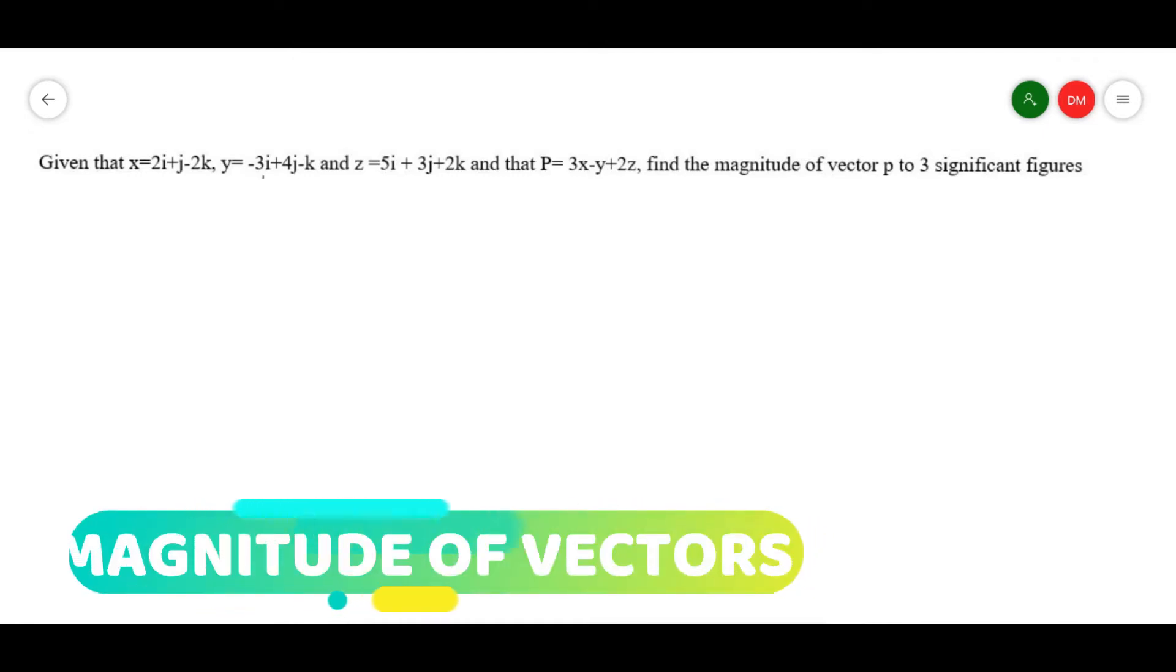So these are vectors expressed in terms of i, j, and k. The first thing to do is to reorganize these vectors and write them in terms of their column vectors. Start with x and write this one as 2i, that is 2, plus 1j minus 2k.